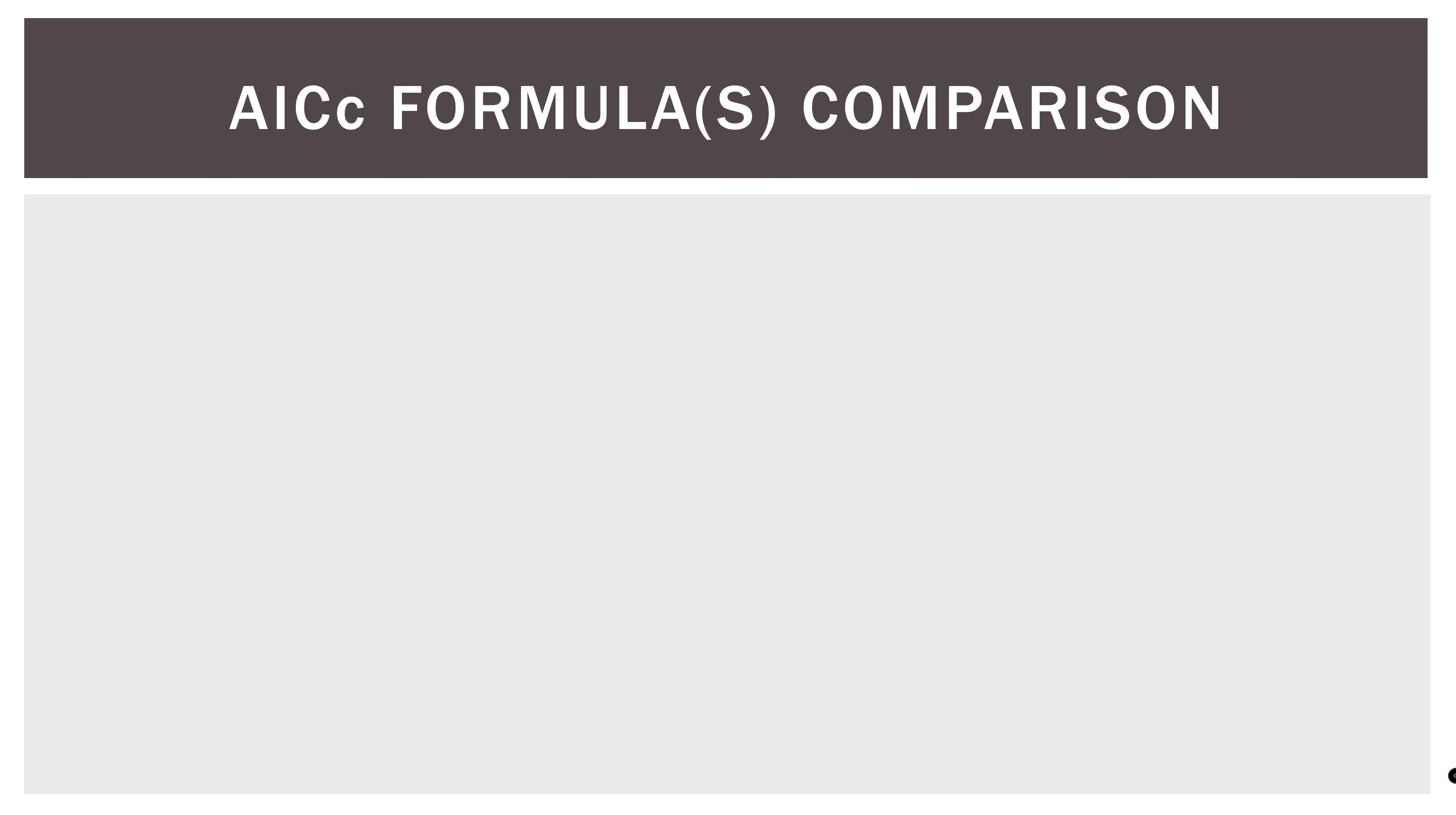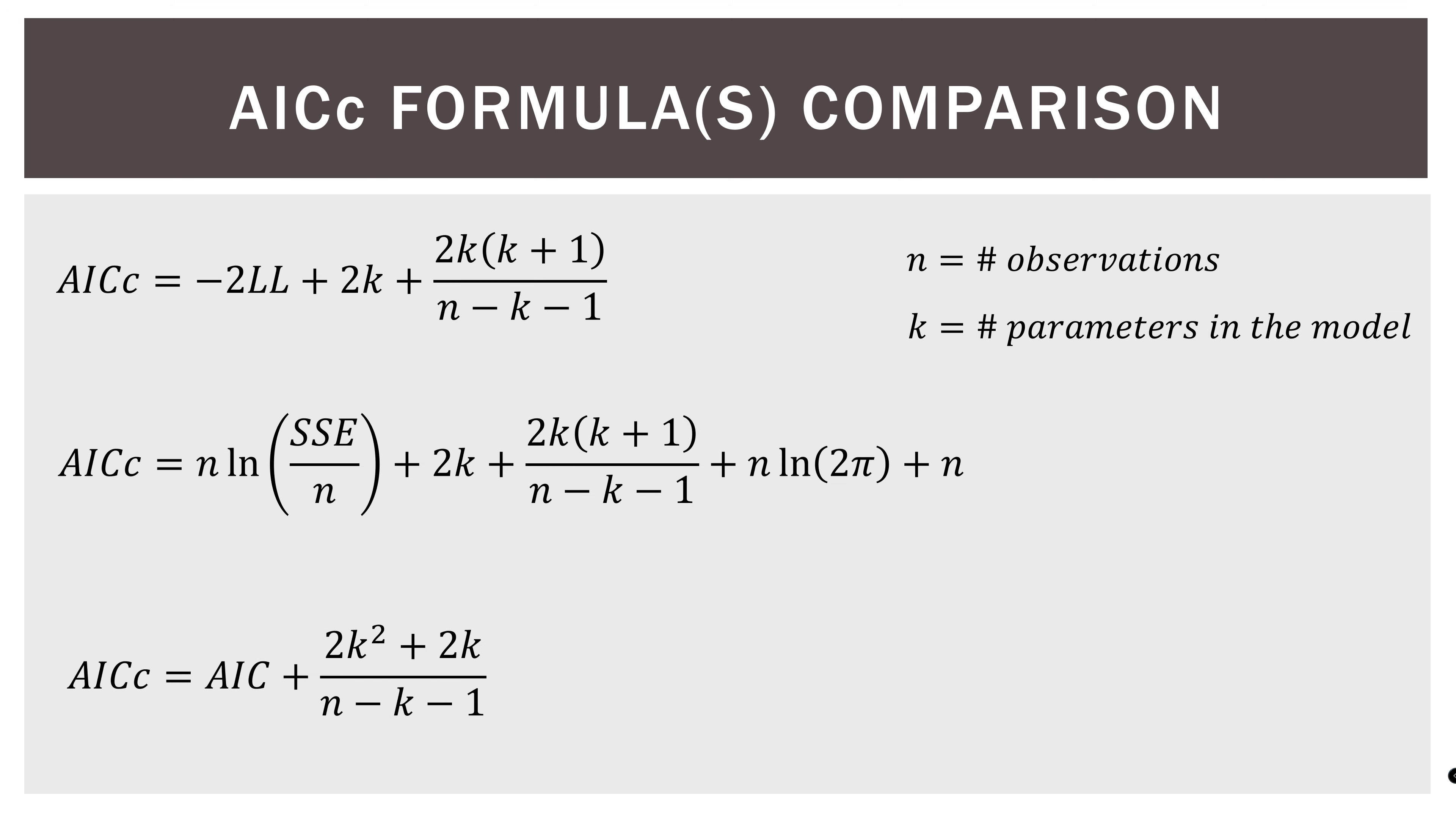So for example, here are some formulas for the AICC. So in these formulas, N is the number of observations we have. And K is the number of parameters in our model. So here is our first one. I'm not going to read through it because trying to read through these complex formulas and then having the captions and everything is a bit complicated. But you can look at this and see how it is put together. That's one version. Here is another version of the AICC. And yet here again is a third version.